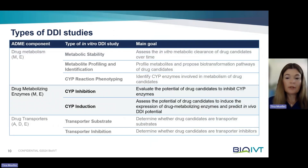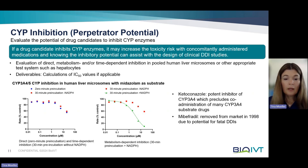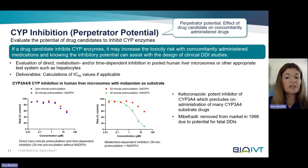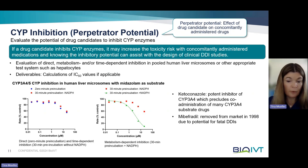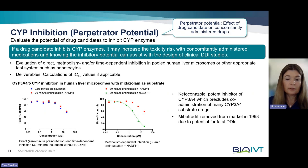Now let's switch gears and learn more about CYP inhibition. CYP enzymes are the major enzymes responsible for drug metabolism, and it is important to evaluate whether a drug candidate has the potential to inhibit these enzymes. CYP inhibition evaluates the so-called perpetrator or precipitant potential of a drug candidate — that is, what effect a drug candidate could have on the metabolism of another drug. If a drug inhibits CYP enzymes, it may increase the toxicity risk with concomitantly administered medications, and knowing this inhibitory potential can assist with the design of clinical DDI studies.